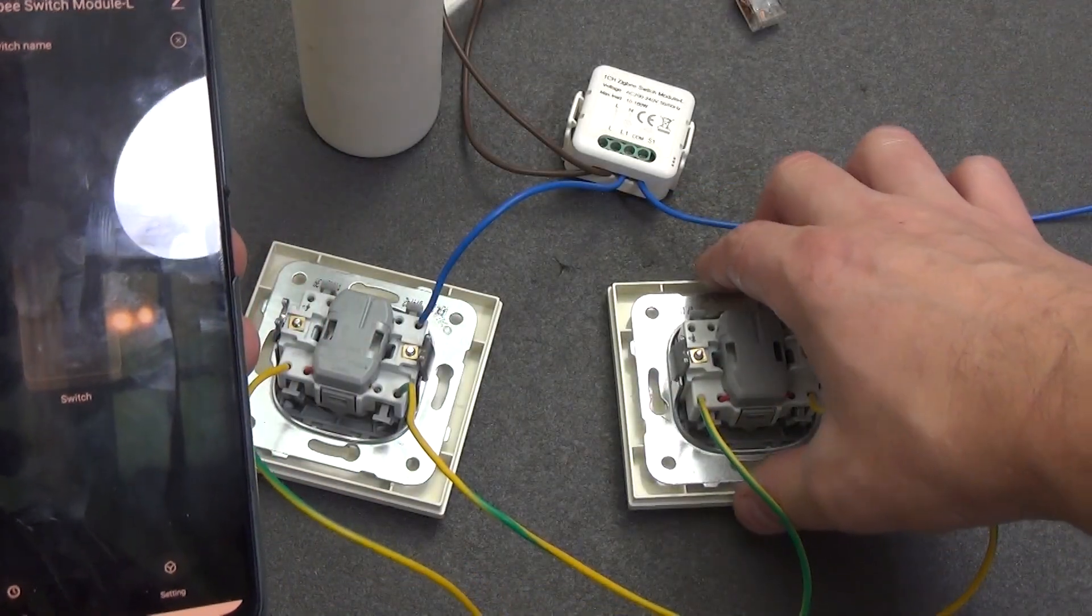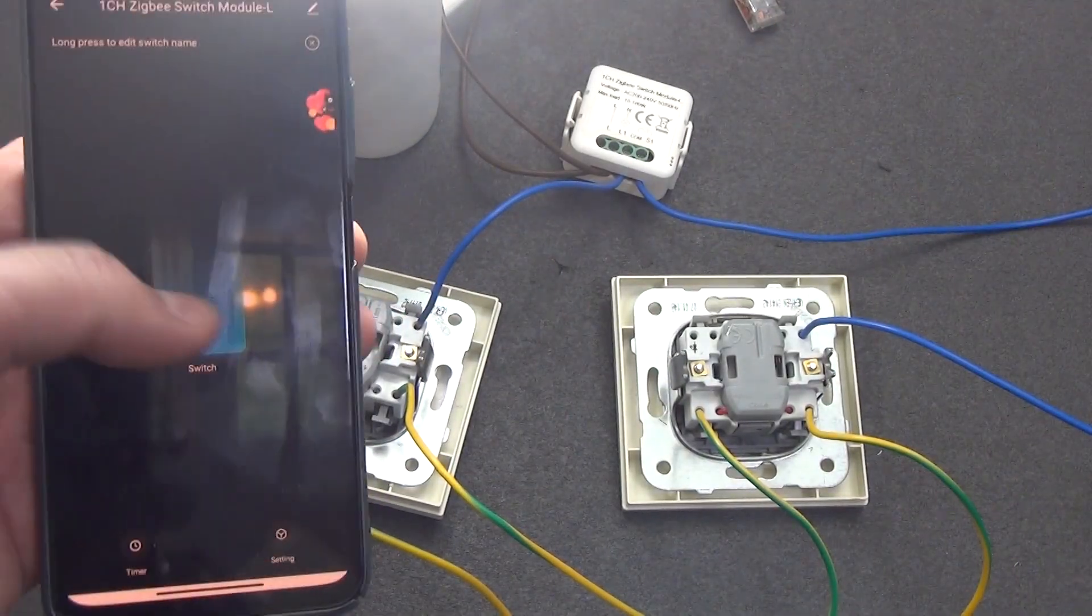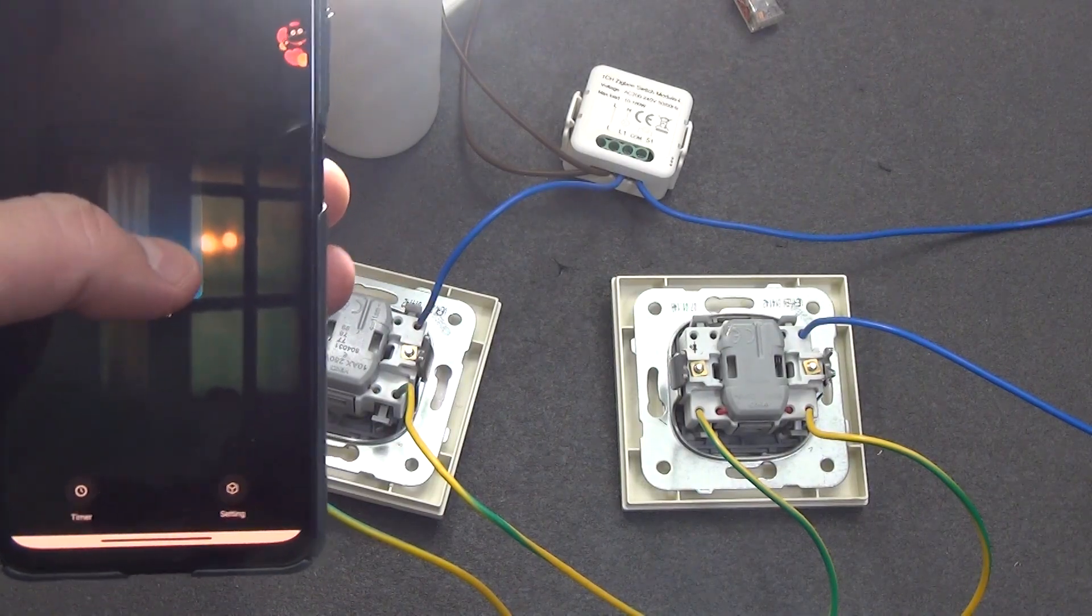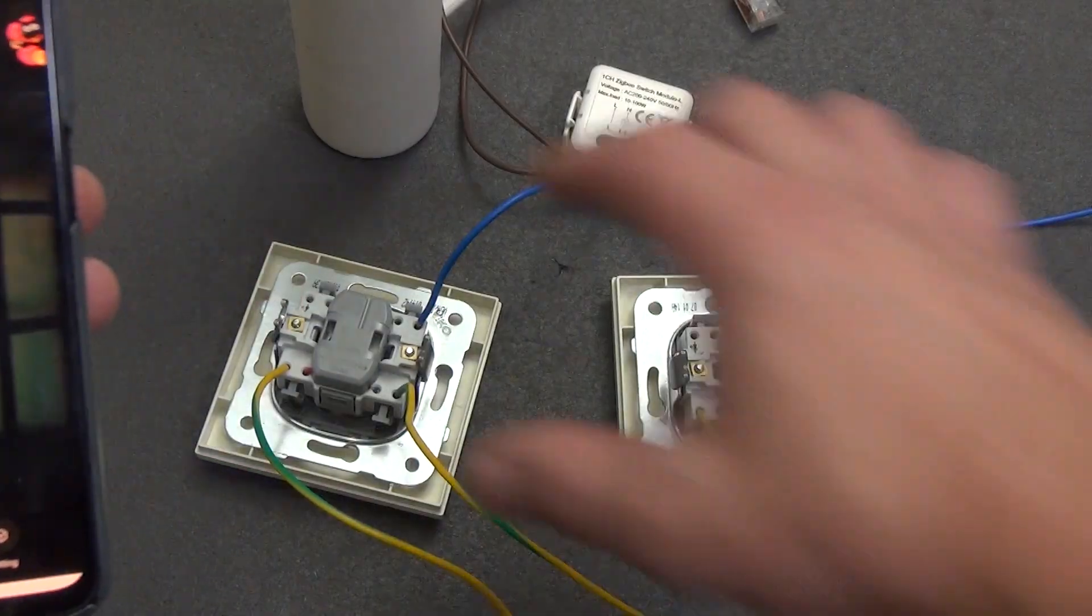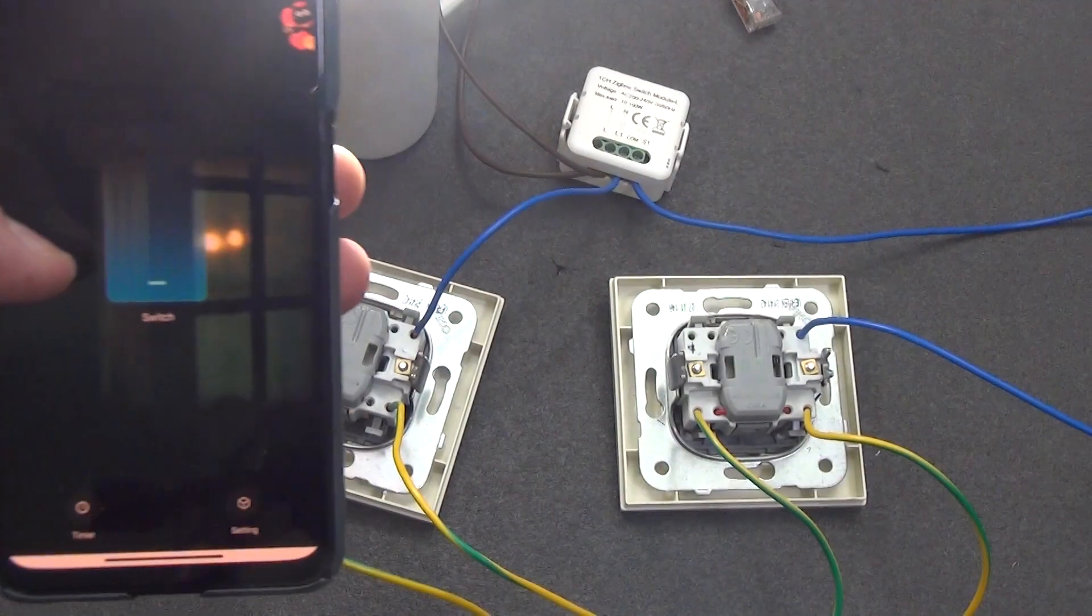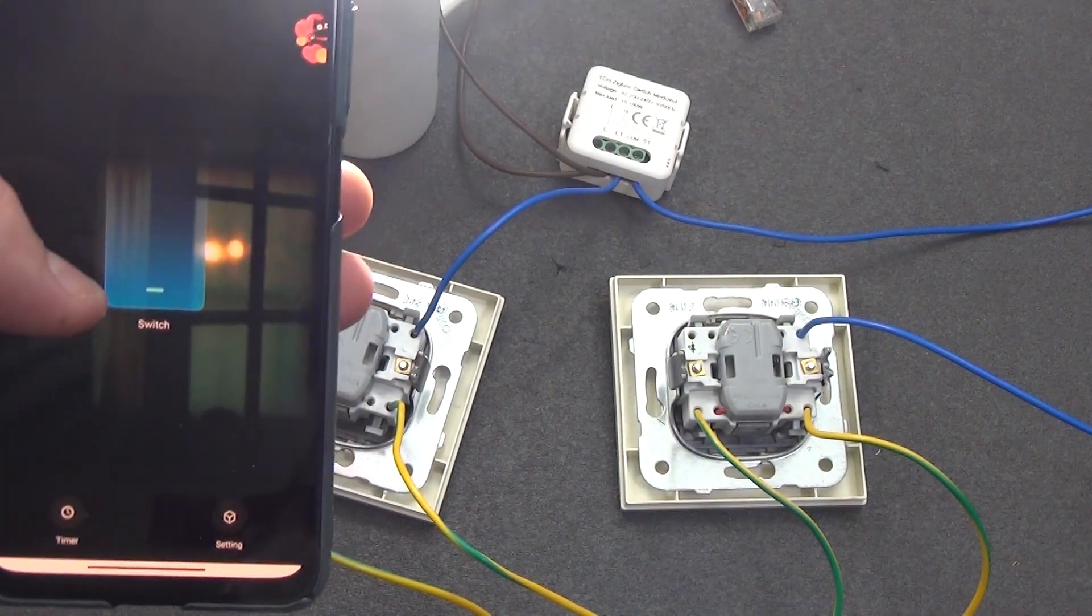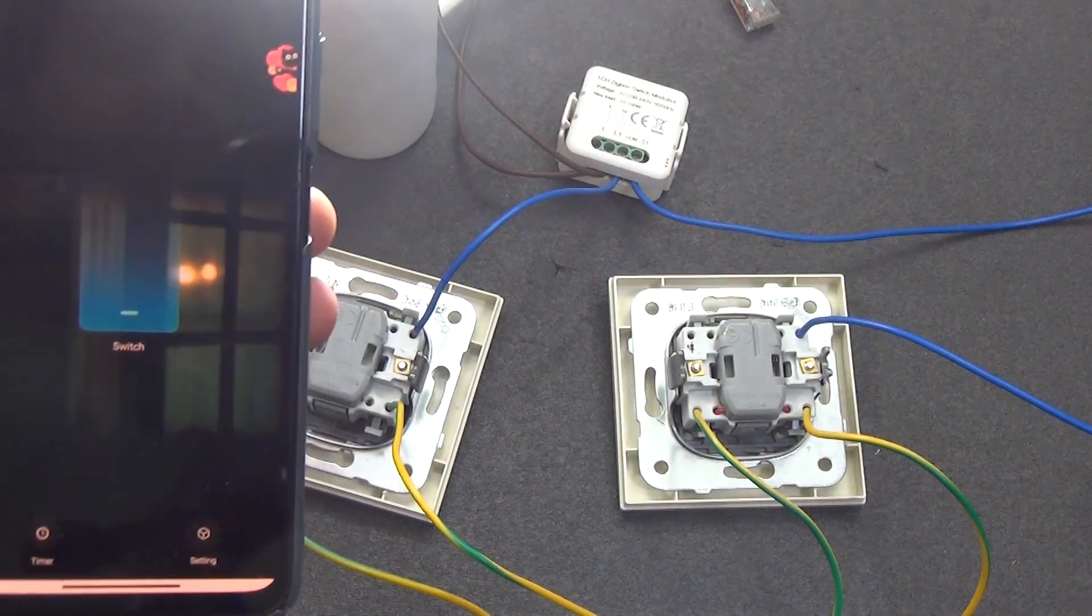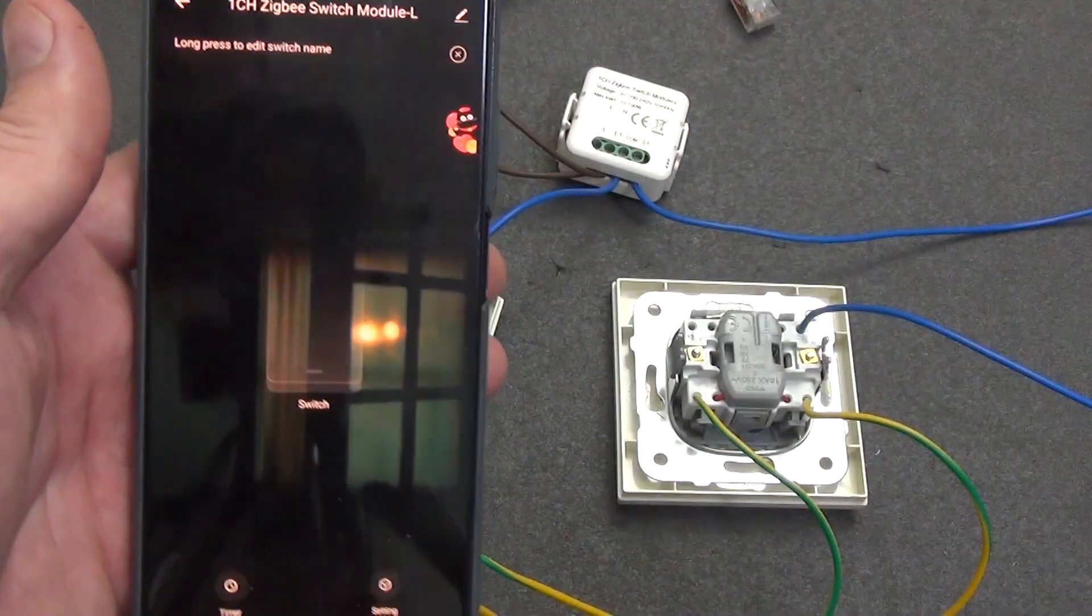Now we can turn on the lighting with the first switch; the status is immediately transmitted to the relay that our light is on. Turn it off with a smartphone. Turn it on with the other switch; the status is again transmitted. We turn it off. And in exactly the same way we can turn it on or off using various automations of your smart home.